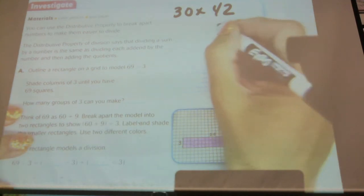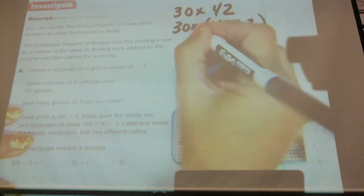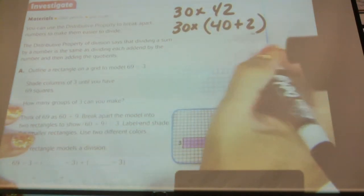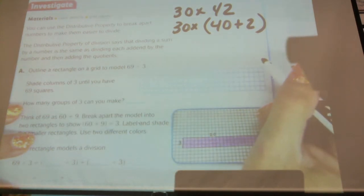40 plus 2. Okay, so I'm breaking apart the 42 to make it 40 plus 2. So this is the addition part. We call that addition. And then we're going to use the distributive property to find the answer.